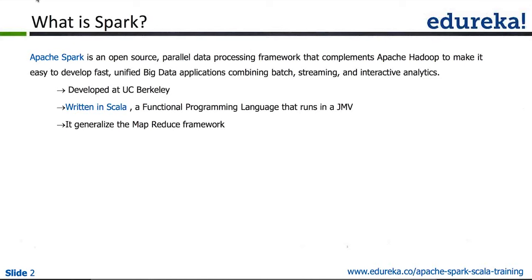Just like Hadoop is written in Java, Spark is written in Scala. Over the period of time as big data systems evolved, people found that the kind of problems they were trying to solve are really functional in nature rather than object-oriented. Java up to version 7 does not really support functional programming; functional programming support came from Java 8. Spark does support Java 8, but the entire source code of Spark is in Scala.